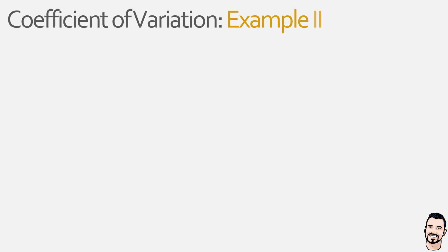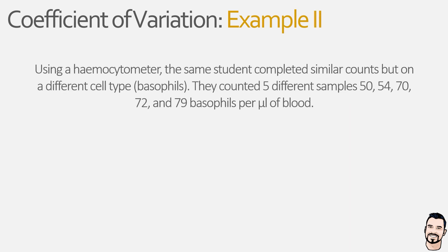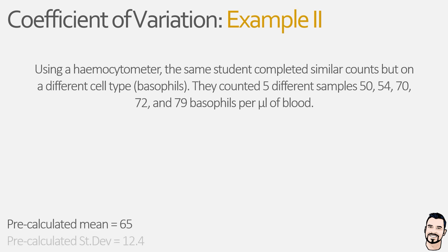Here, the same student wants to look at a different cellular population in the blood — specifically basophils, which are a different type of white blood cell present in much smaller quantities. In the same samples the student counted 50, 54, 70, 72, and 79 basophils per microliter. Following this experimental counting, the student calculated the mean to be 65 and the sample standard deviation to be 12.4.